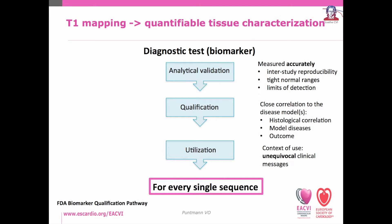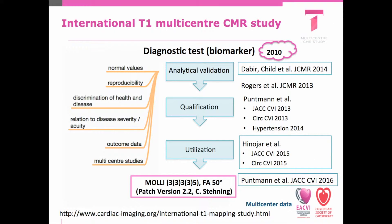We also have to accept that prior to any clinical use, a T1 mapping sequence has to undergo a biomarker qualification pathway, where we ascertain whether the sequence can measure accurately — that is, by way of interstudy reproducibility. We need to determine normal ranges as well as limits of detection. We need to establish correlation to the proposed disease models — that is, by way of histological validation, evidence in model diseases, as well as outcome studies. Finally, we need to define the context of proposed use — the clinical setting where this diagnostic test provides unequivocal, clean and clear clinical messages. This is just an example of work done based on the ACE sequence and a version of scanner software, where considerable evidence is based on multicenter data.